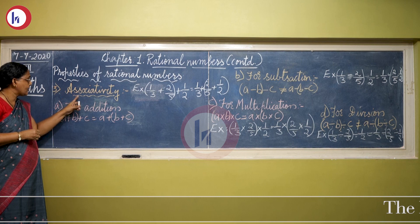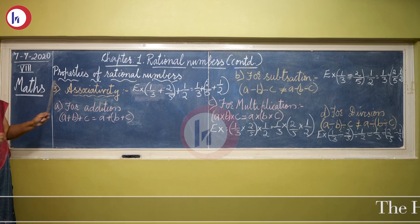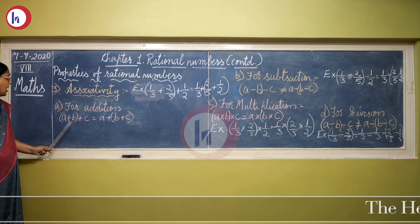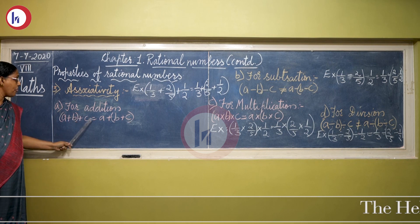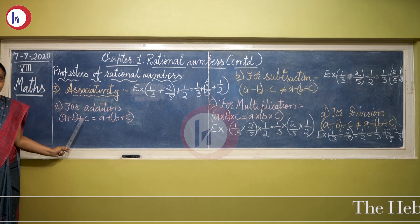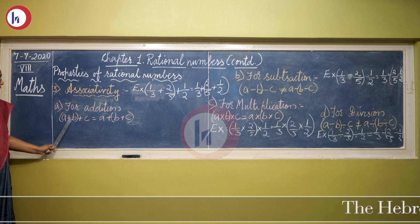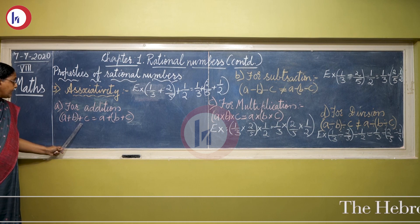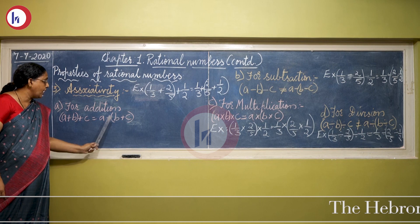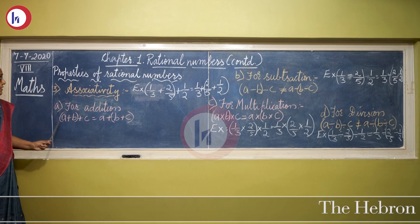What is meant by associativity? Associativity for addition can be written as (a + b) + c = a + (b + c). This means the sum of the first two rational numbers added with the third number will be equal to the first rational number added with the second and third numbers.